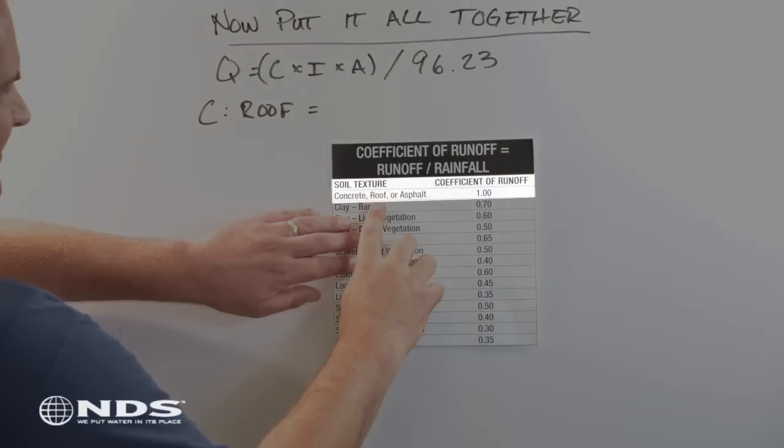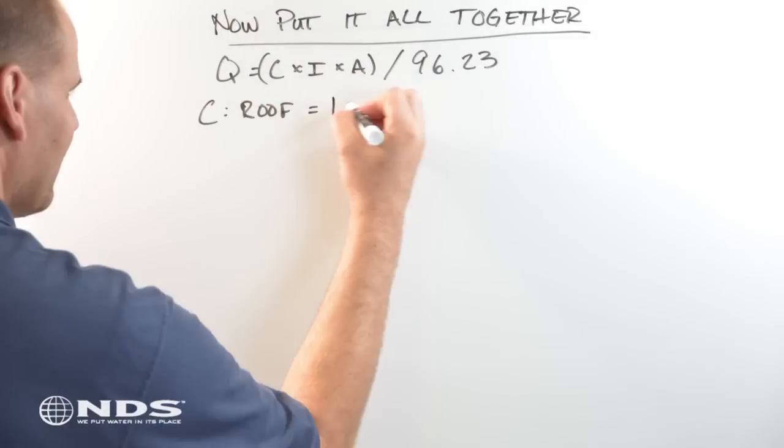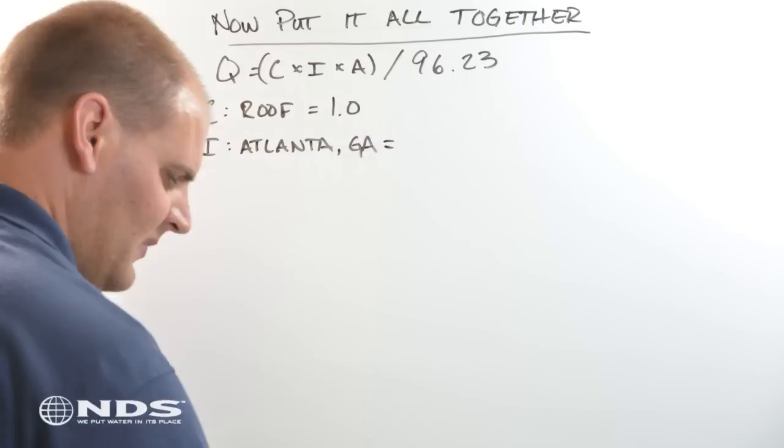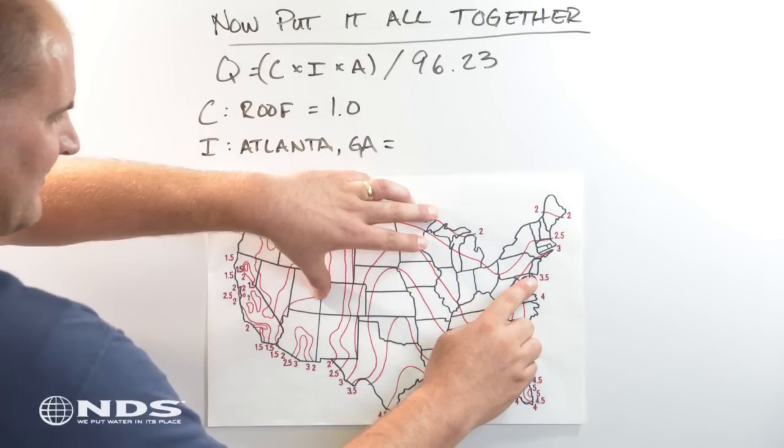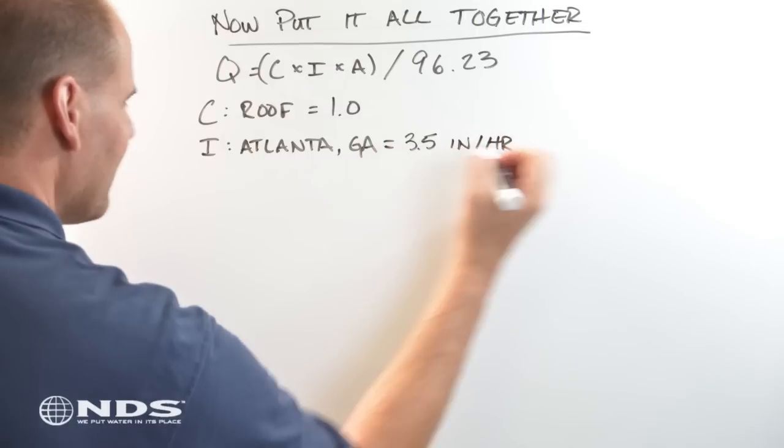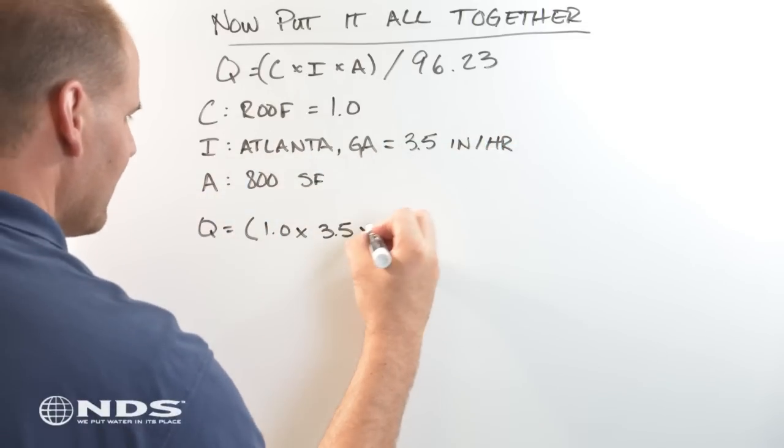The runoff is coming from the roof, so the C value in our equation is 1.0. Let's pretend this house is in Atlanta, Georgia. The I value is 3.5 inches per hour, and the A value is 800 square feet.